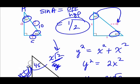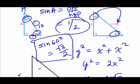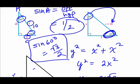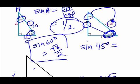The sine of 60, going opposite over hypotenuse, gives us root 3 over 2 — and that's always the case. The sine of 45 degrees: opposite over hypotenuse gives you 1 over root 2, but you rationalize the denominator to get root 2 over 2. So those are where the values one half, root 3 over 2, and root 2 over 2 come from.